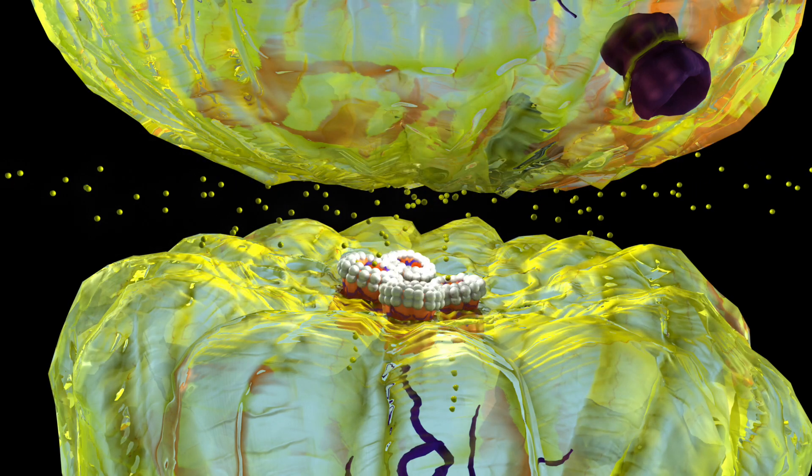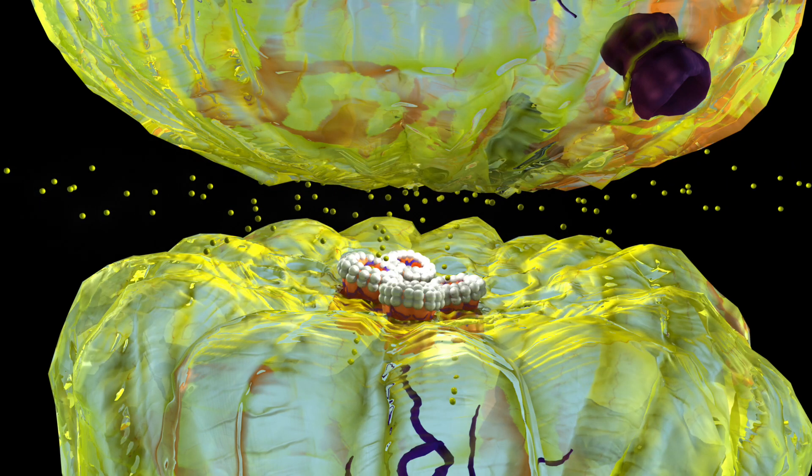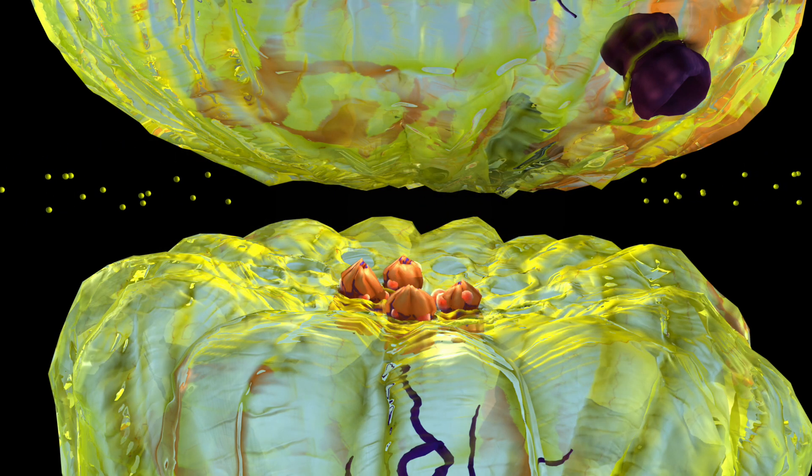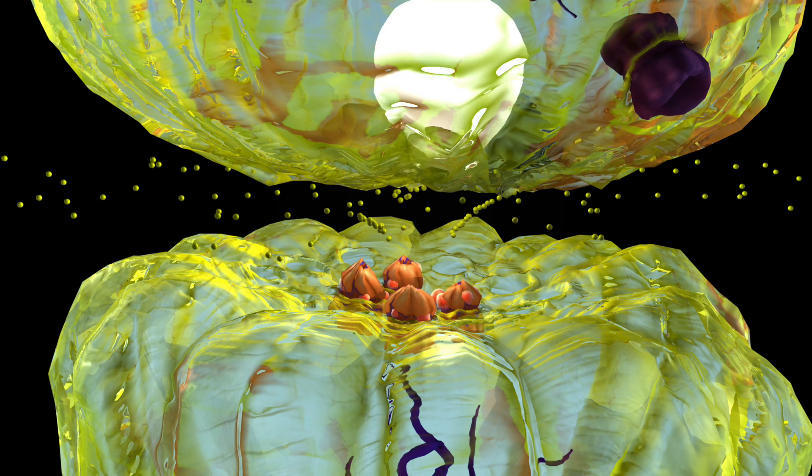The binding of depolarizing neuromuscular blockers keep the receptor open for so long that it becomes desensitized to acetylcholine. The desensitized receptor stops the electrical signal and the muscles remain relaxed.